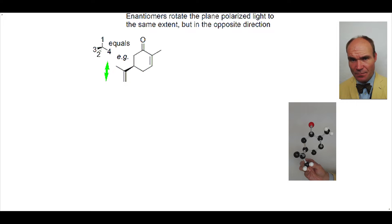Enantiomers rotate plane polarized light by the same magnitude but in opposite directions. This is one of the enantiomers of carvone. It rotates plane polarized light anti-clockwise, or to the left.